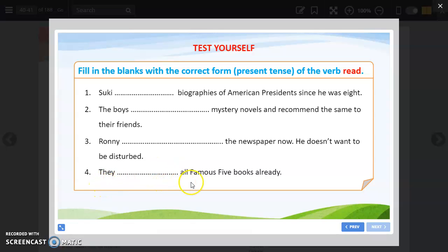They [blank] all Famous Five books already. They have read. In read, the spelling is R-E-A-D for read, read, and read, but it is pronounced as 'red' in past tense.